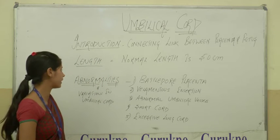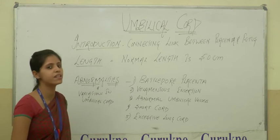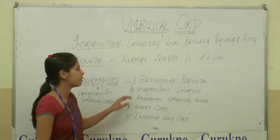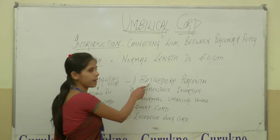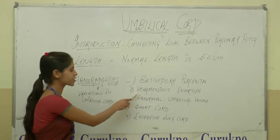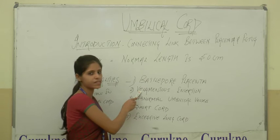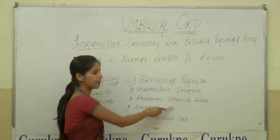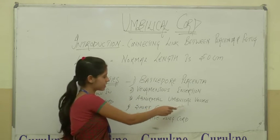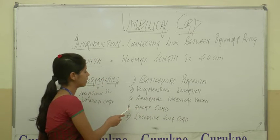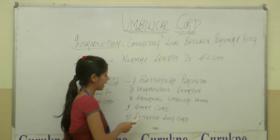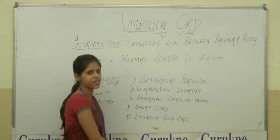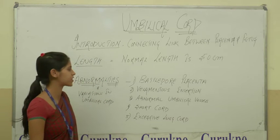Coming to the umbilical cord variations. The first one is Battledore Placenta. Next one is Velamentous Insertion. Next one is abnormal umbilical vessels. Next, short cord. And last but not the least, excessive long cord.